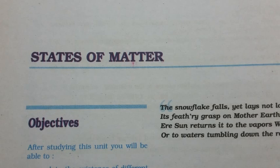5.6.1 Density and Molar Mass of a Gaseous Substance. The ideal gas equation can be rearranged as: n/V = P/RT. Replacing n by m/M gives: m/(M × V) = P/RT, i.e., D/M = P/RT. On rearranging, the relationship for calculating molar mass of a gas is: M = DRT/P, where D is the density of the gas.